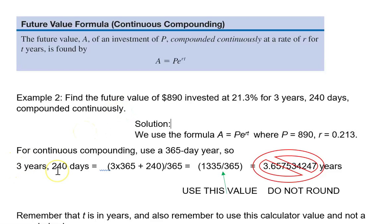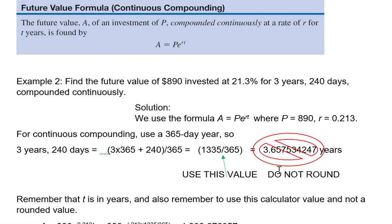So for 3 years, 240 days, please note we're going to use a 365-day year for continuous compounding. I've taken 3 times the number of days in a year plus 240 days for the total number of days and divided that by 365, the number of days in a year. And the result of what's in parentheses is 1,335 days over the 365 days in a year. Please use this fraction when you're plugging into the formula. Do not use the decimal equivalent because you might not get the right answer every time.